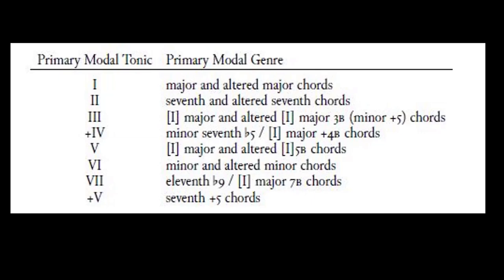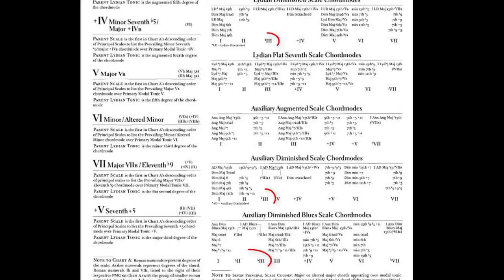There are eight primary modal genres rather than seven because Russell needs to account for the sharp fifth in the Lydian augmented scale. Other altered scale degrees — flat 2nd and flat 3rd — are seen simply as alterations and are not counted among the principal genres. The reason is probably related to the fact that the plus five genre gives rise to an important class of chords — seven augmented fifth — while the others do not.